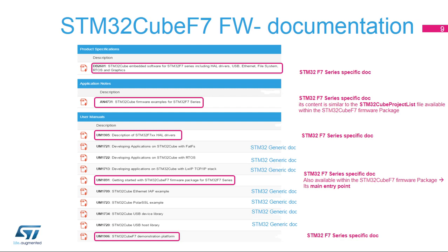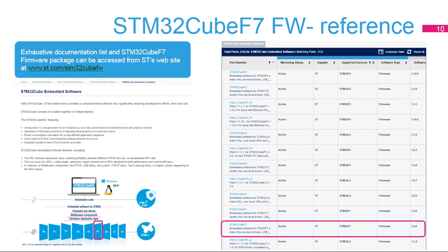The Getting Started with the STM32CubeF7 Firmware Package User Manual is the document you need to read first when starting to use the STM32Cube firmware package. The STM32CubeF7 firmware can be downloaded from the ST website at www.st.com/STM32CubeFW. Thank you.